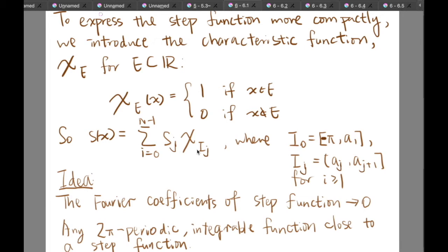So why are we introducing step functions? In fact, we are going to prove two facts. The first fact is that the Fourier coefficient of the step function will tend to zero as n tends to infinity. And the second is that any 2π periodic and integrable function will be close to a step function. So how can we prove these two facts?